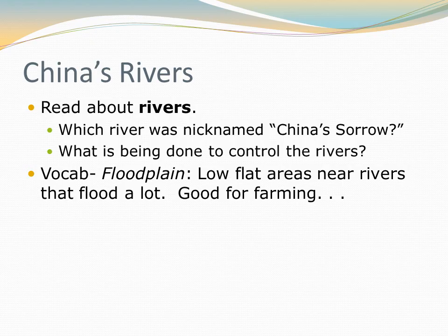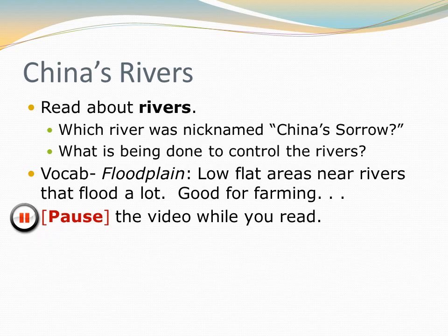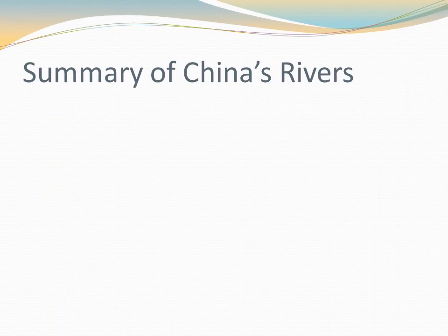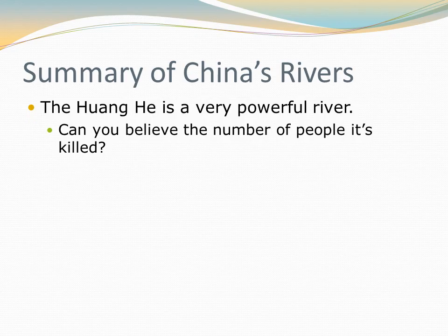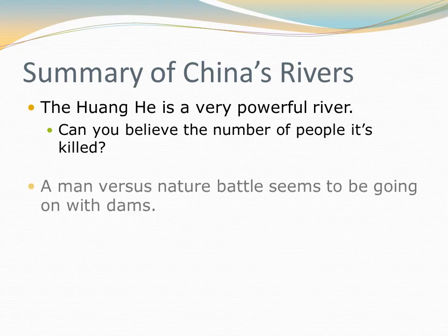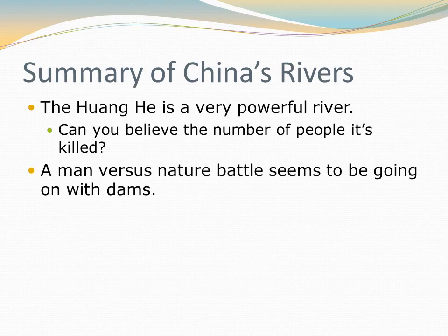Time to pause the video and read the section about China's rivers. We're back. Isn't it interesting how powerful the Huanghe River is? I never realized a river could kill that many people — millions of people killed by this one river. And it looks like the Chinese government is engaged in a man-versus-nature battle over there. They're building all these dams, trying to control rivers that have been flowing for millions of years. Long term, I don't know if that's going to work, but they're sure going to give it a try.